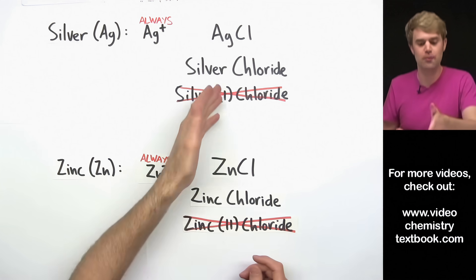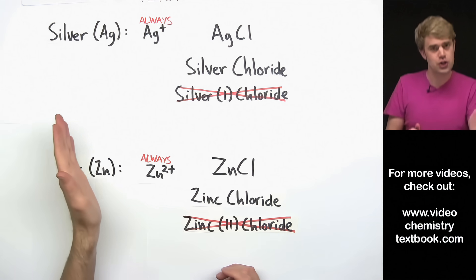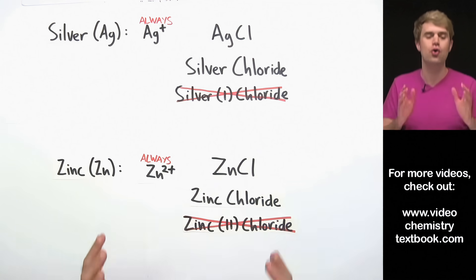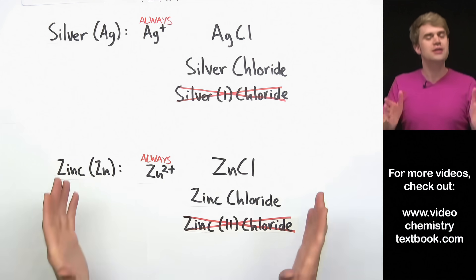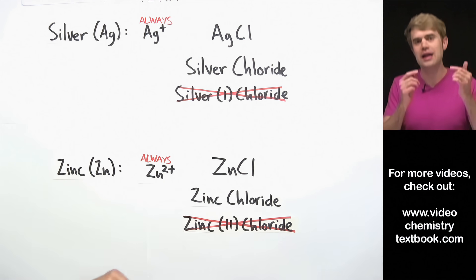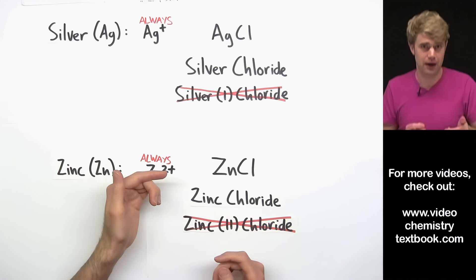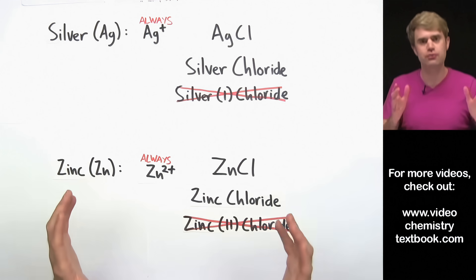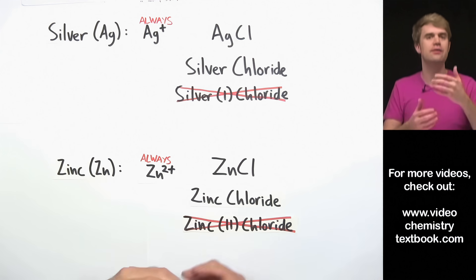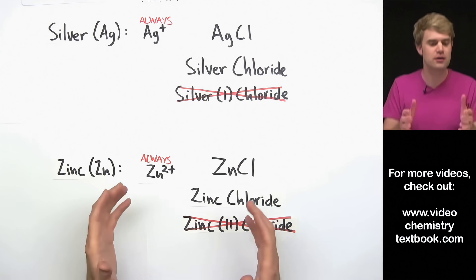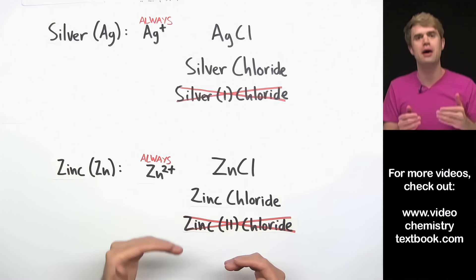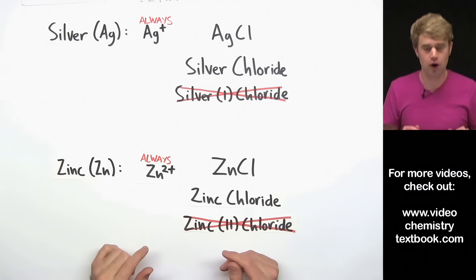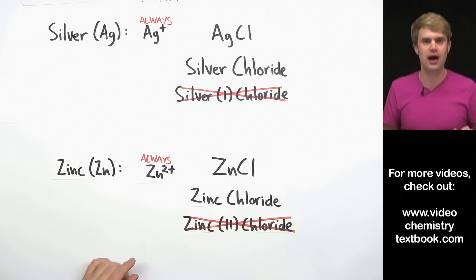We only use Roman numerals if we're trying to distinguish between multiple types of ions with different charges. That's an introduction to how we name compounds that have transition metals in them. In the next video, we'll do a whole bunch of practice problems so you can really get the hang of it — this is one of those things you get better at with more practice.